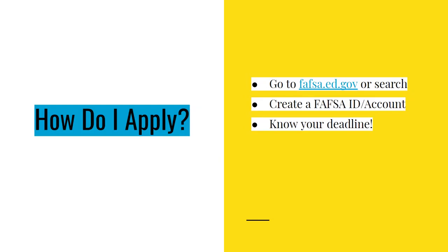To start your application process, you can go to fafsa.ed.gov or Google FAFSA to find their website. You will want to create an account, which they call a FAFSA ID, before you start filling out your application to avoid delays. Your FAFSA ID will also allow you to electronically sign forms. Make sure you submit your application before the deadline for your selected term, whether that is fall or spring, as your application will not be accepted past the deadline. You can either print out an application or fill one out online. I would suggest filling one out online as there are a lot of helpful tools on their website if you have trouble understanding how to answer a specific question.